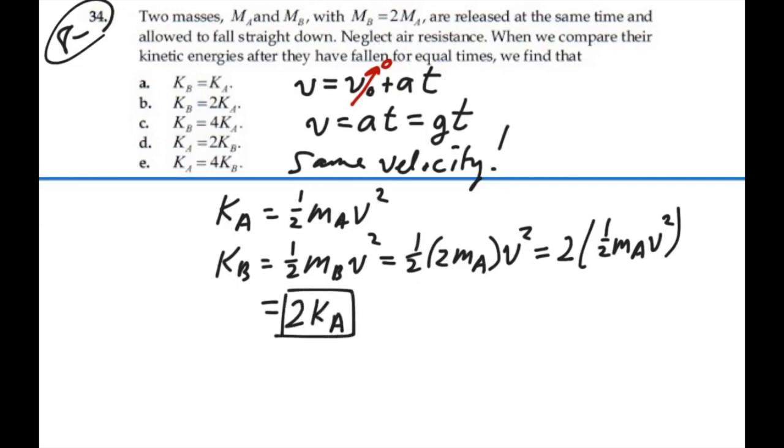So the kinetic energy of B will be twice the kinetic energy of A, simply because it's got twice the mass, and they're going to have the same velocity if they fall for the same amount of time. Answer B.